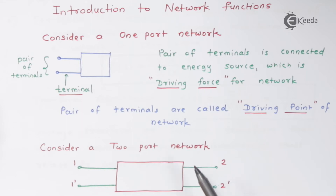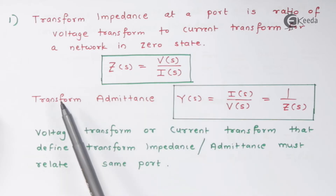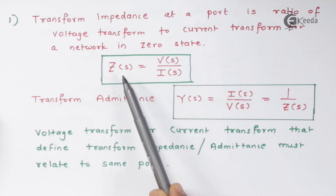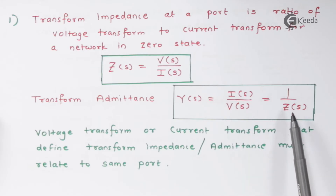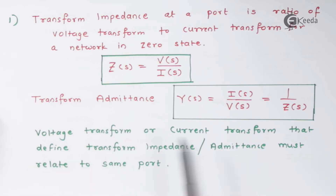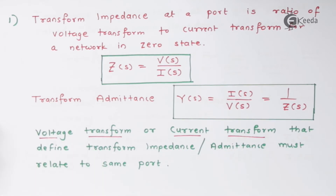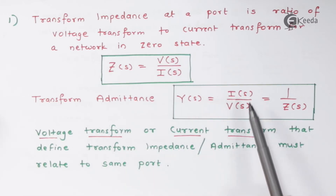You can also calculate Z22, which will be V2(S) divided by I2(S). Similarly, we have transform admittance, which is current upon voltage — exactly the opposite of impedance. So admittance Y(S) = I(S) / V(S), which is the reciprocal of Z(S). The voltage transform or current transform that define transform impedance or admittance can be seen here — impedance is defined by voltage and current, admittance again defined by current and voltage.